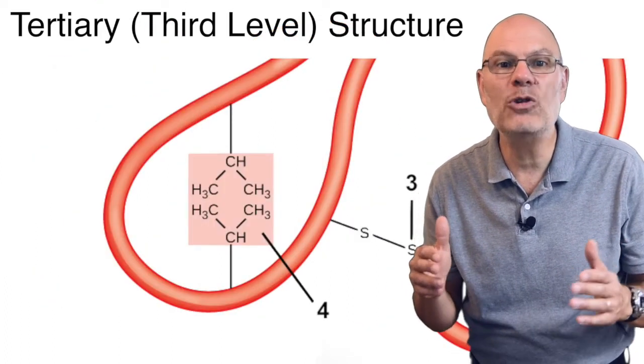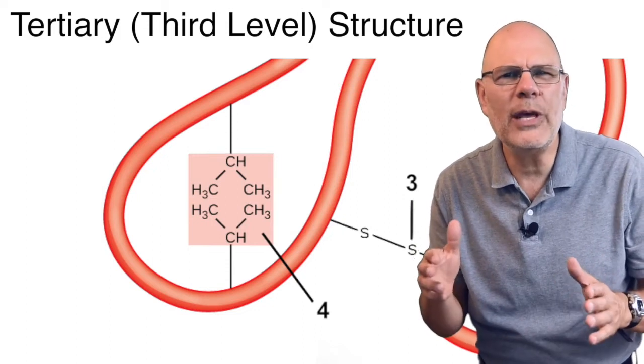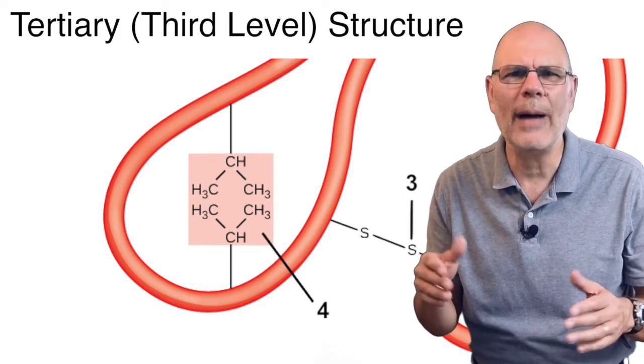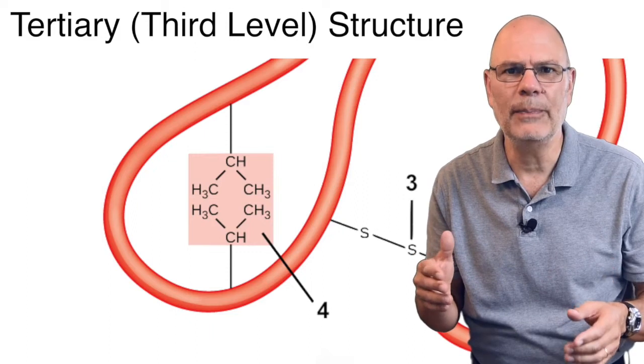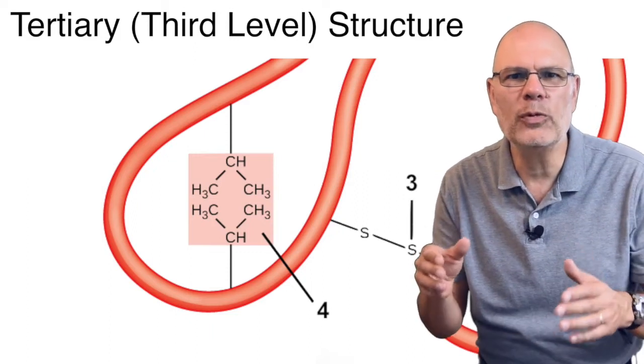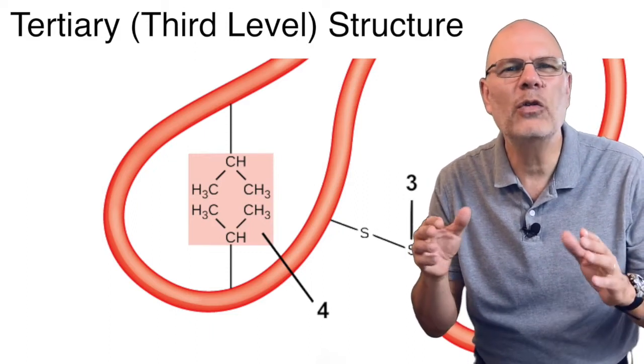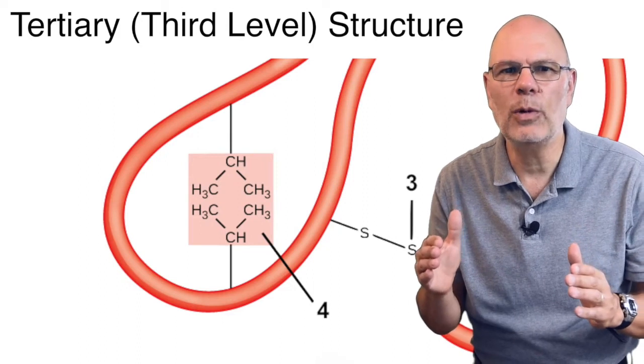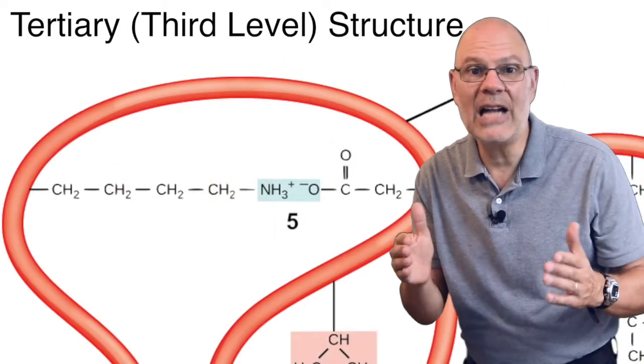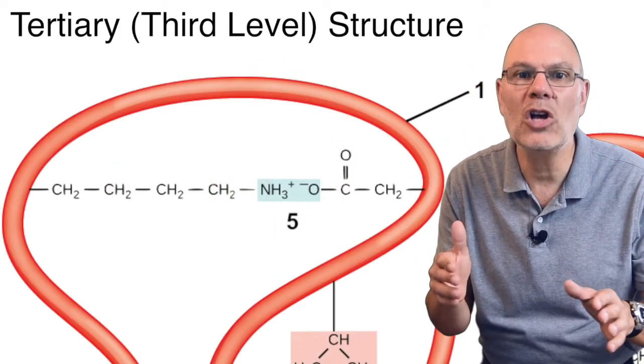At four, we have hydrophobic clustering. You can think of these as being like oil droplets within the structure of a protein. These hydrophobic R groups are avoiding water, and they're also forming very weak bonds with one another. At five, we see ionic bonds forming, again causing a loop.